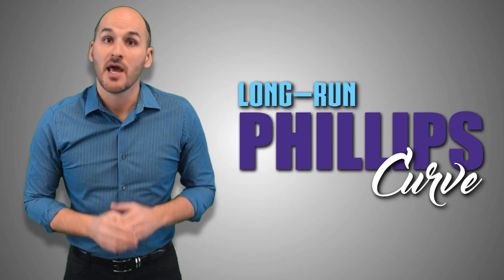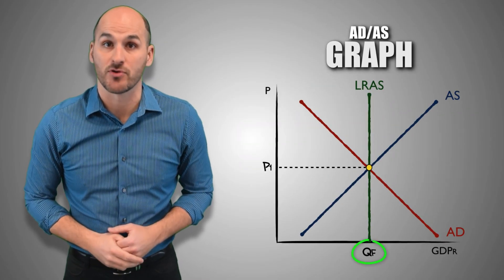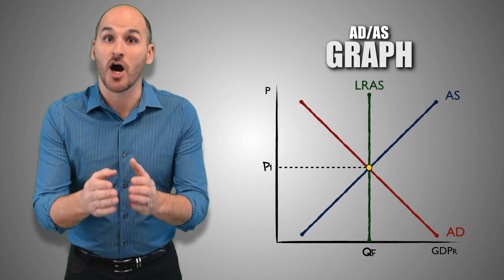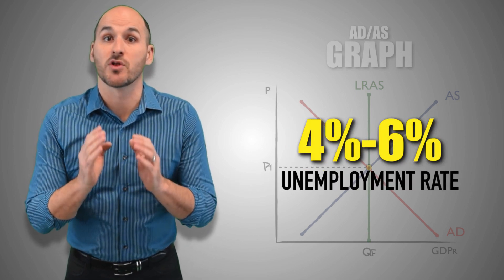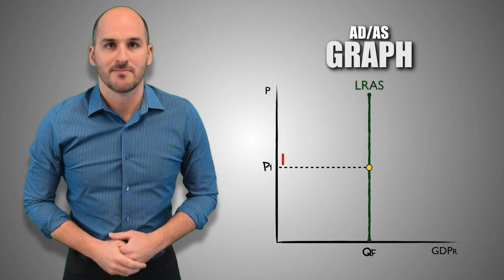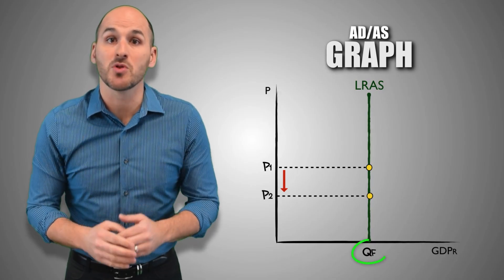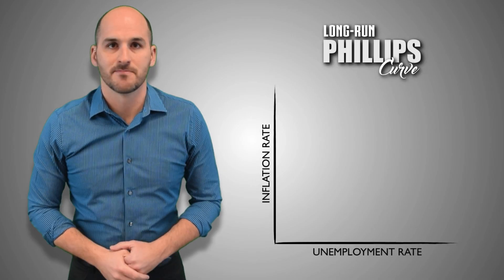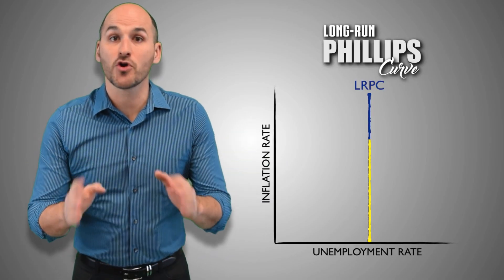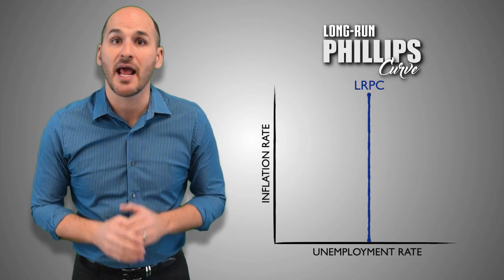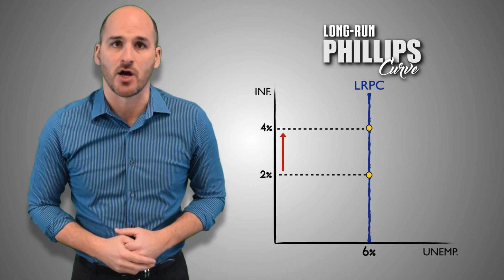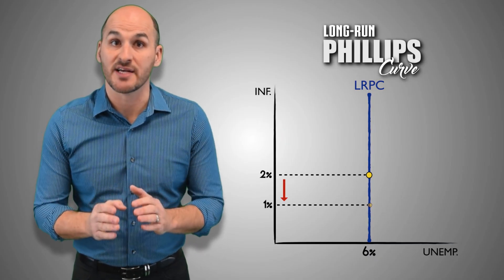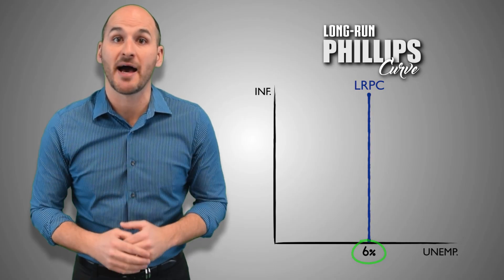A.W. Phillips' theory regarding the inflation rate and the unemployment rate has been applied to the long run as well. In the long run, an aggregate economy produces its full capacity level of real GDP output with the full employment of its resources. This means that an economy is producing economic goods at an unemployment rate of 4% to 6%, or the natural rate of unemployment attributed to frictional and structural unemployment that cannot be prevented. This is the long run Phillips curve. The vertical slope of the curve visualizes the constant relationship between the inflation rate and the unemployment rate in the long run, meaning the unemployment rate does not change even when price levels change. The long run Phillips curve visualizes the natural rate of unemployment at which the economy can produce its full capacity level of real GDP output.